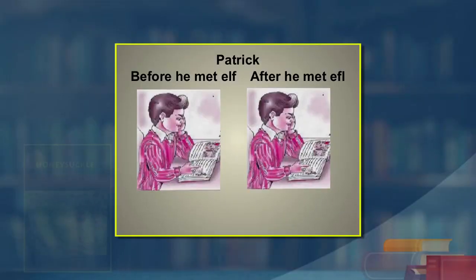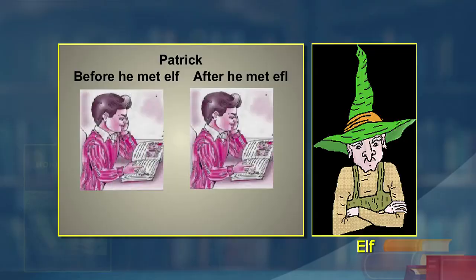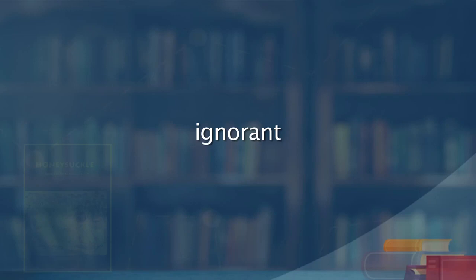Well done! Learners, there are lots of questions at the end of the textbook. Now look at the two sides of Patrick. Till he finds the elf he was a different person; after he found it he is a different person. Let us describe with some words or sentences how Patrick was before he met the elf and how he is after. Before he met the elf he was ignorant — the word used in the story is 'ignoramus.'